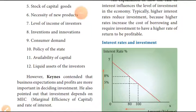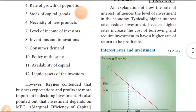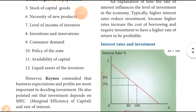Point 7: the level of income of innovators. The income level of innovators affects their ability and willingness to invest.